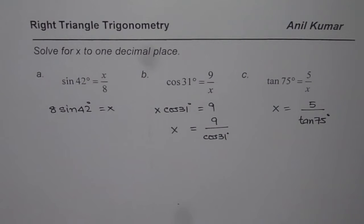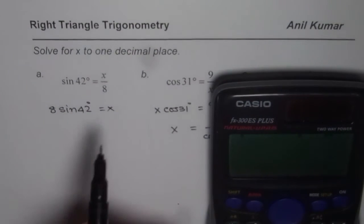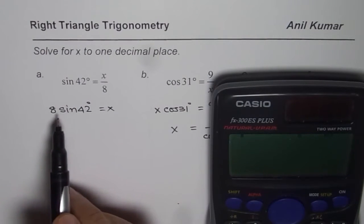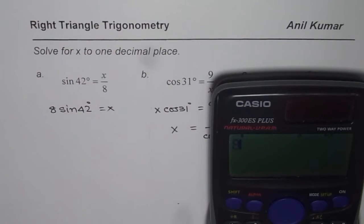Now, let us use calculator and find our answers. For the first one, x equals 8 times sin 42 degrees. I will suggest first you write 8, and then sin of 42 degrees. Sin 42. Set your calculator to degrees. It could be in radians at times.